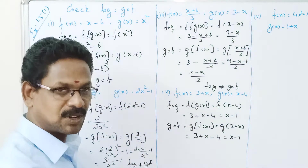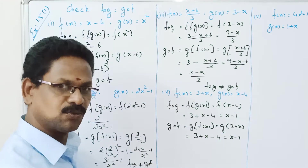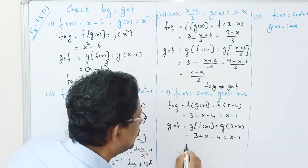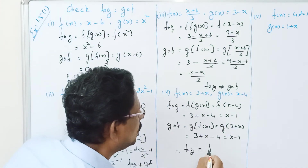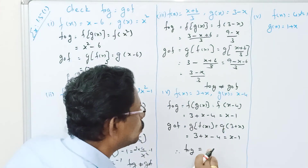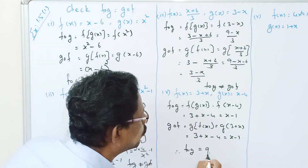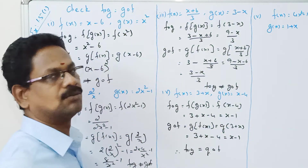Here F composition G equals G composition F. Both equal X minus 1.